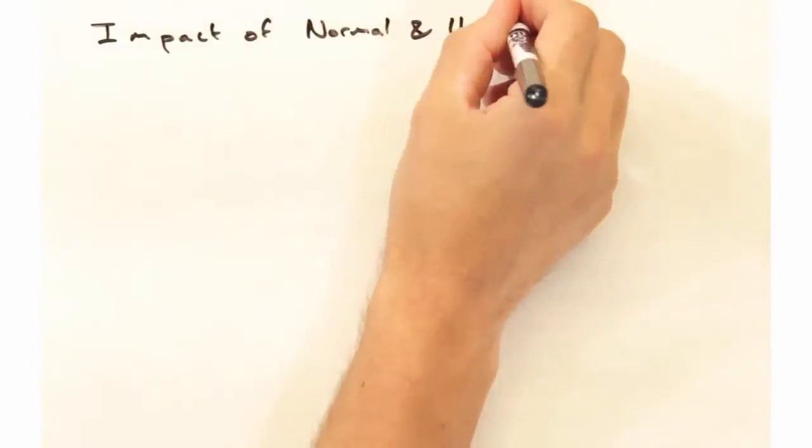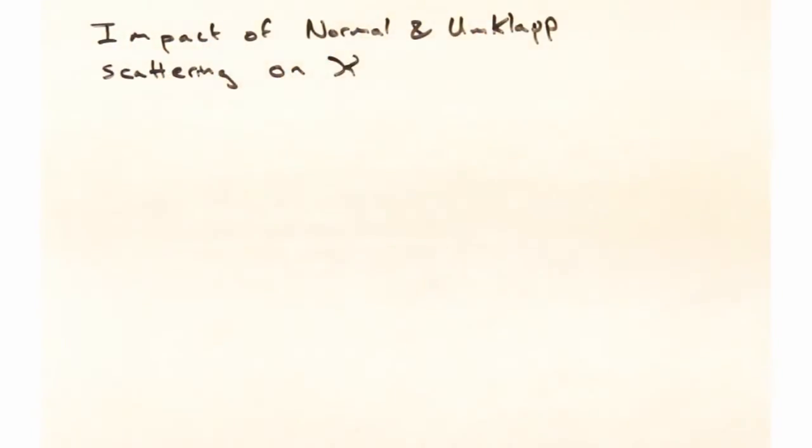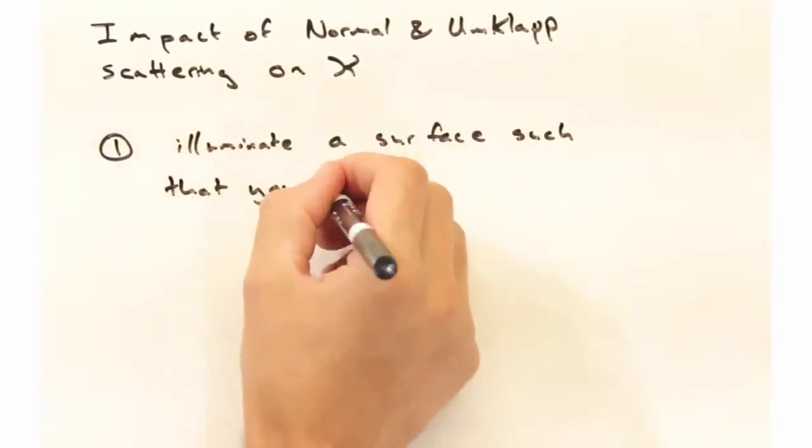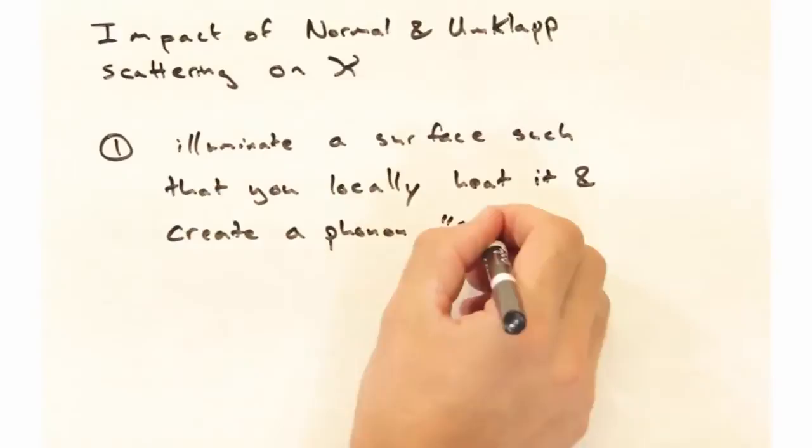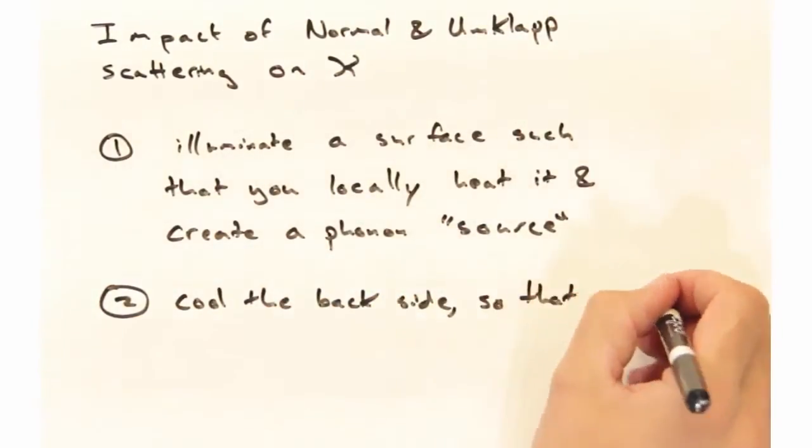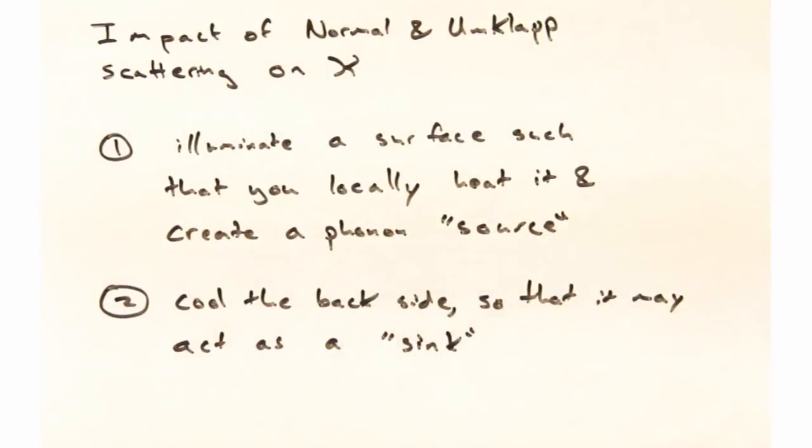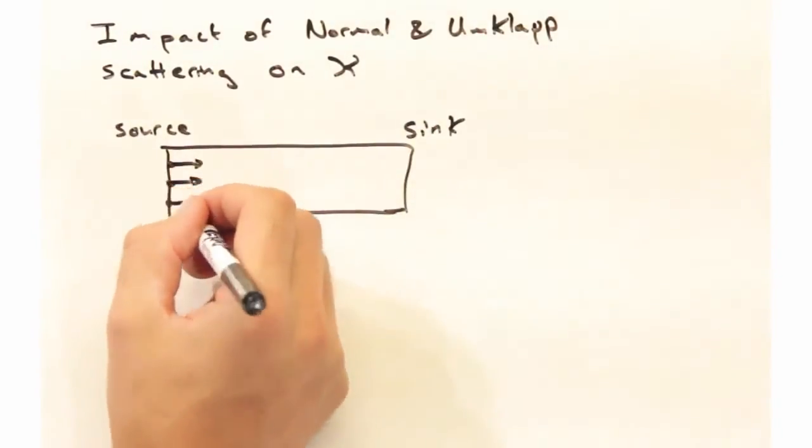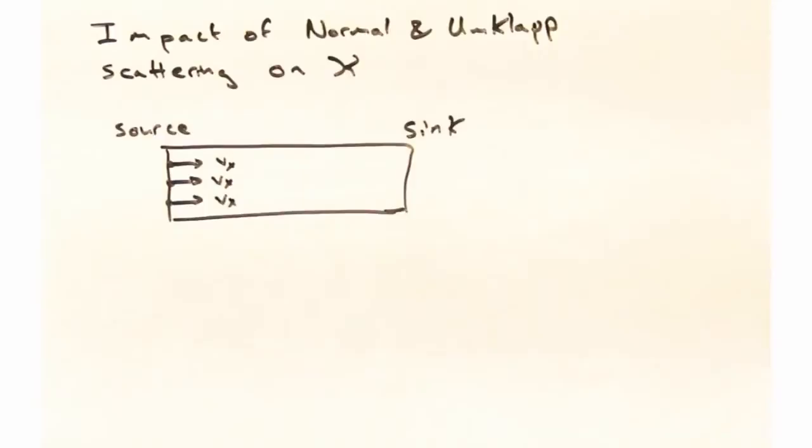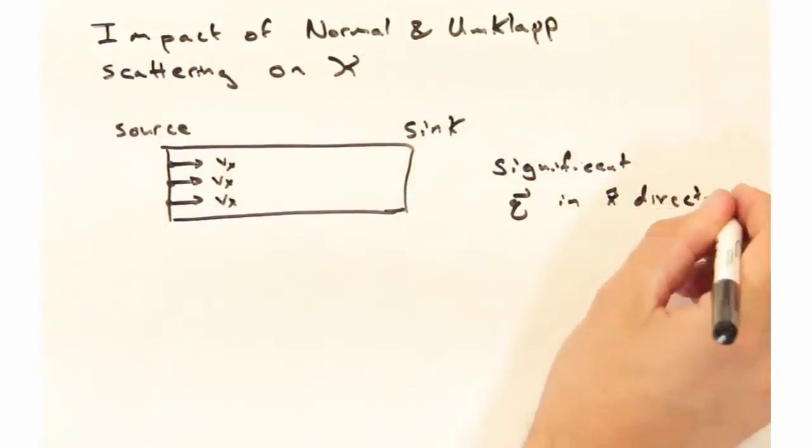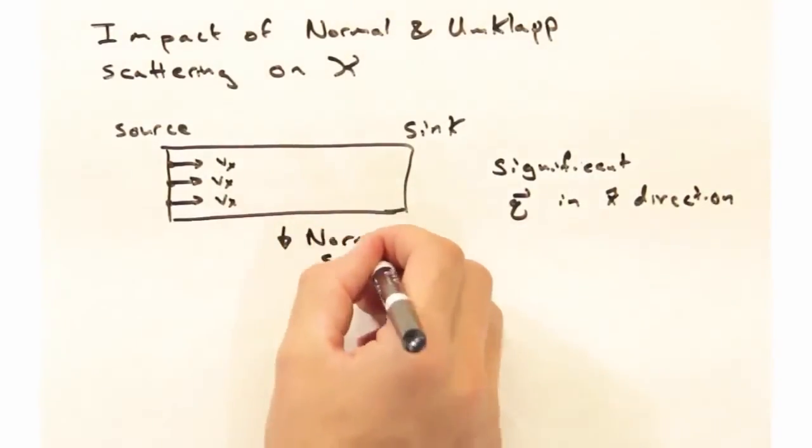Now that we have some understanding of normal and umklapp scattering processes, let's take a look at their impact on thermal conductivity. We're going to start by illuminating a surface with light such that you locally heat it, and basically create a phonon source. We should also probably cool the backside so that it's going to act as a sink. We can visually see this in terms of a bunch of phonons coming from this left side, all of which have a positive vx velocity. This gives us significant phonon momentum in the positive x direction.